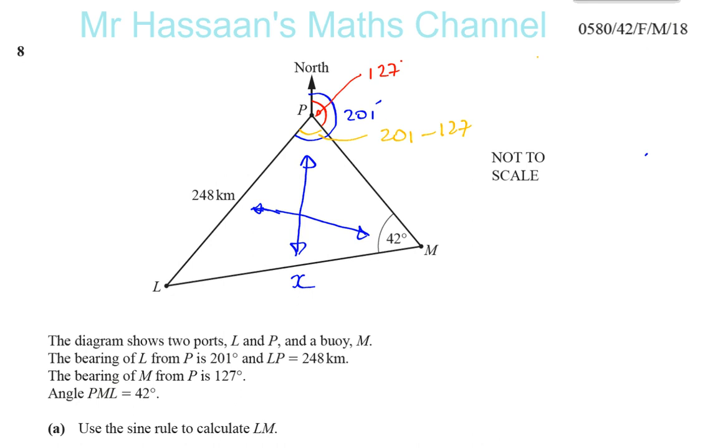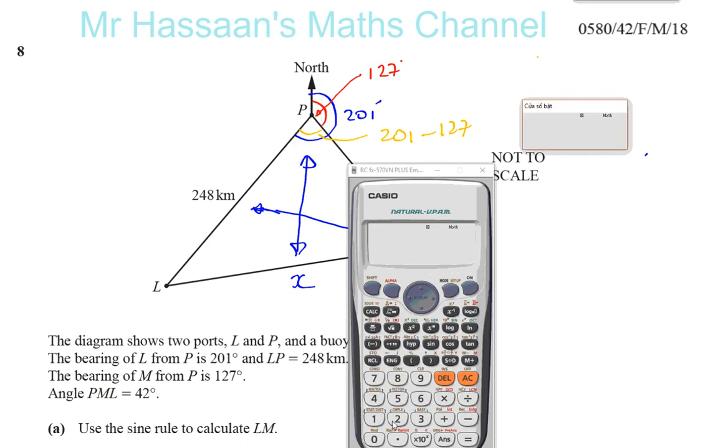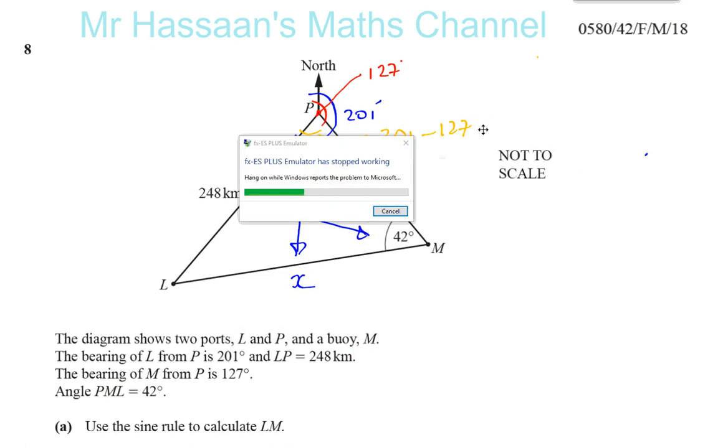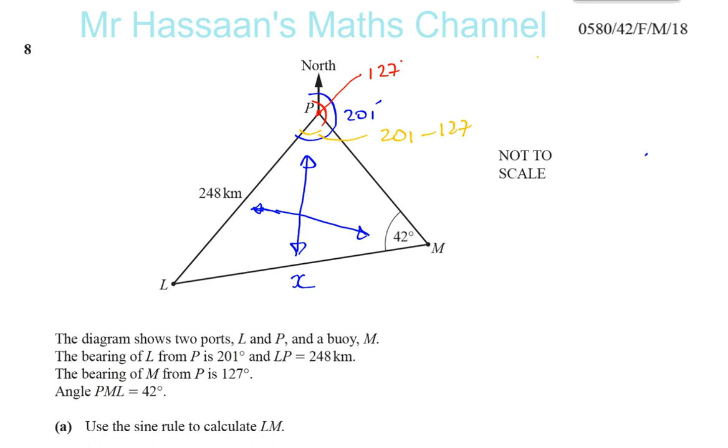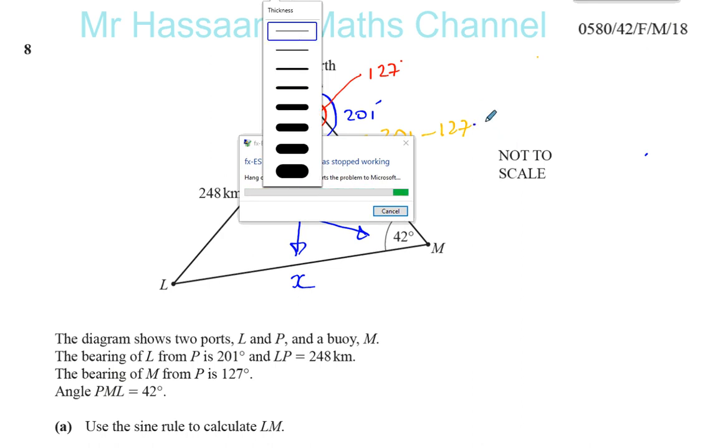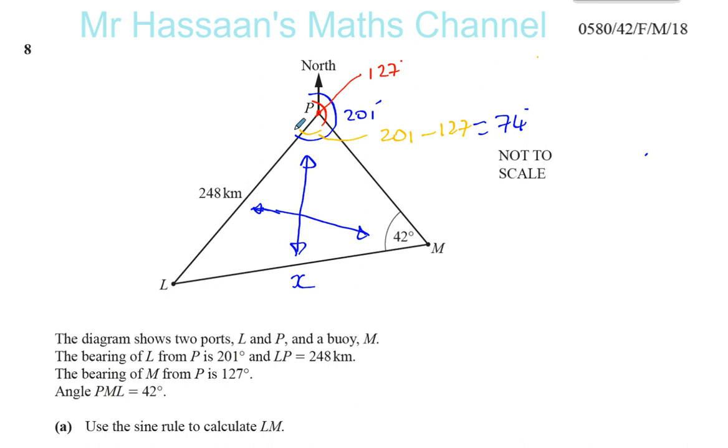It's the difference between 201 and 127. So 201 minus 127, that will give you 74 degrees. So I know that this angle here is 74.